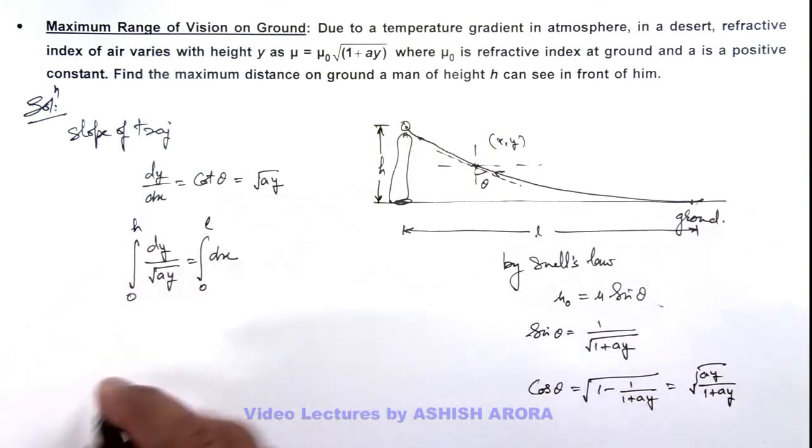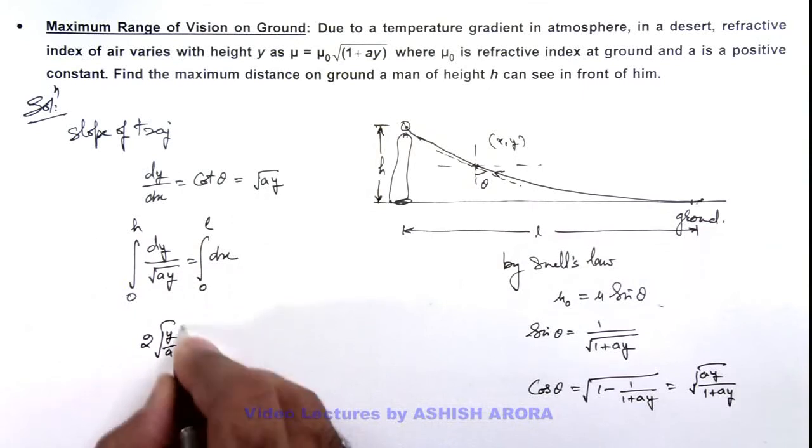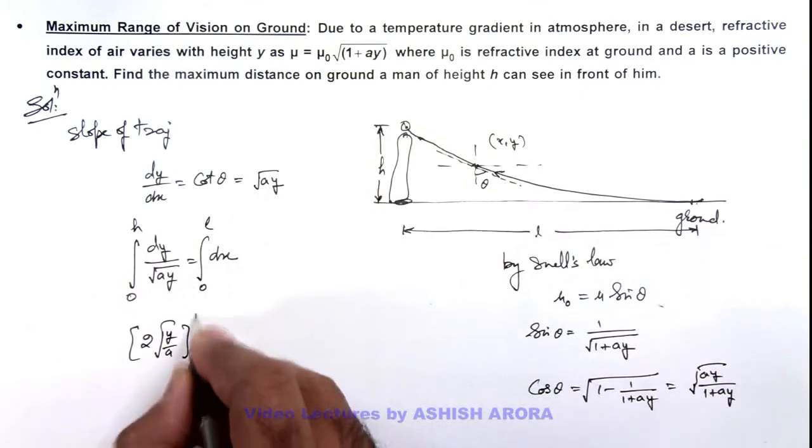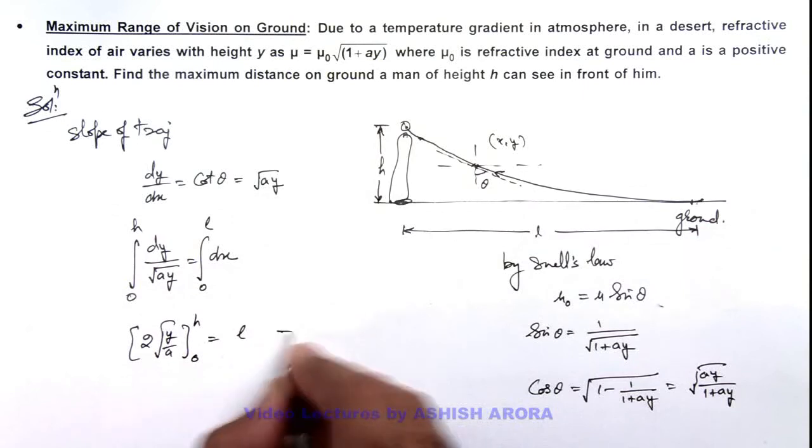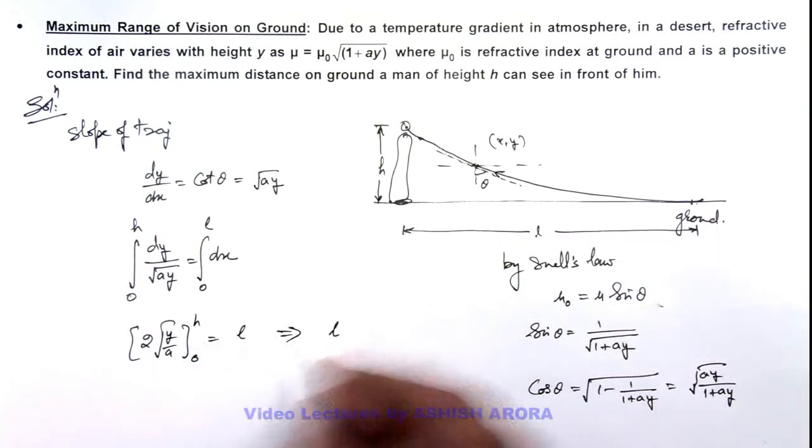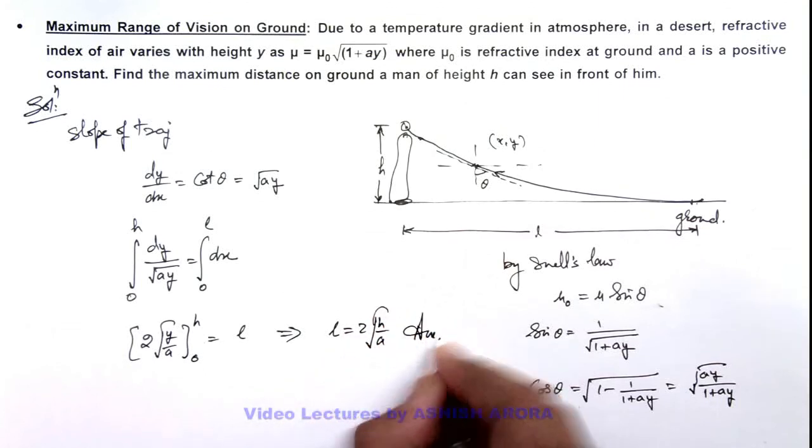So on integrating this we get the result as 2√(y/ay), we apply limits from 0 to h is equal to l. This implies the value of l, the maximum range of vision on ground we are getting is 2√(h/ay), that is the result of this problem.